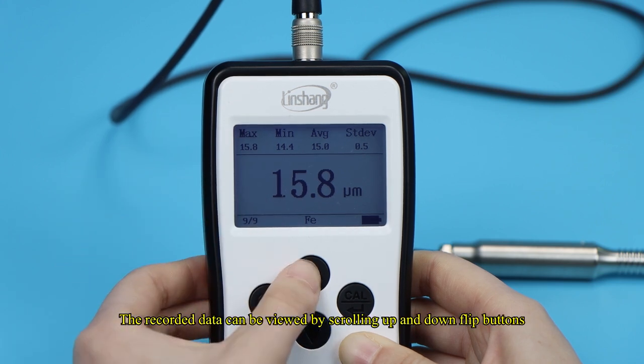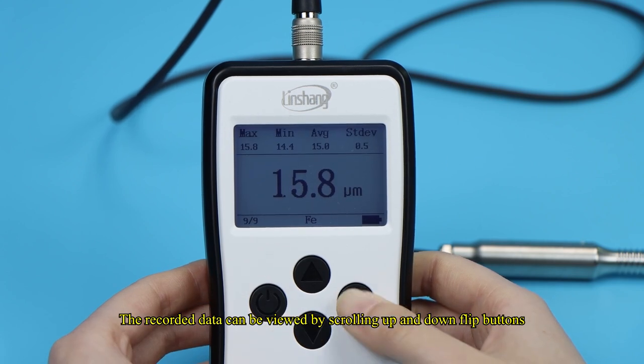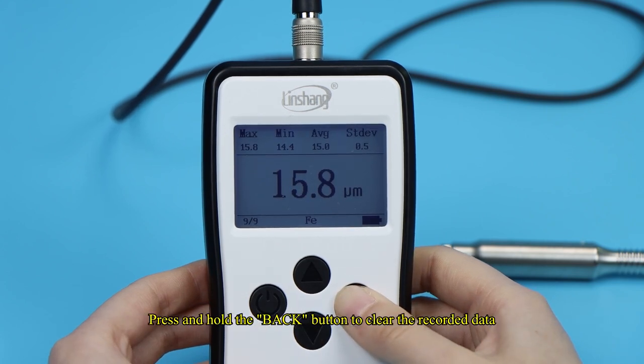The recorded data can be viewed by scrolling up and down flip buttons. Press and hold the back button to clear the recorded data.